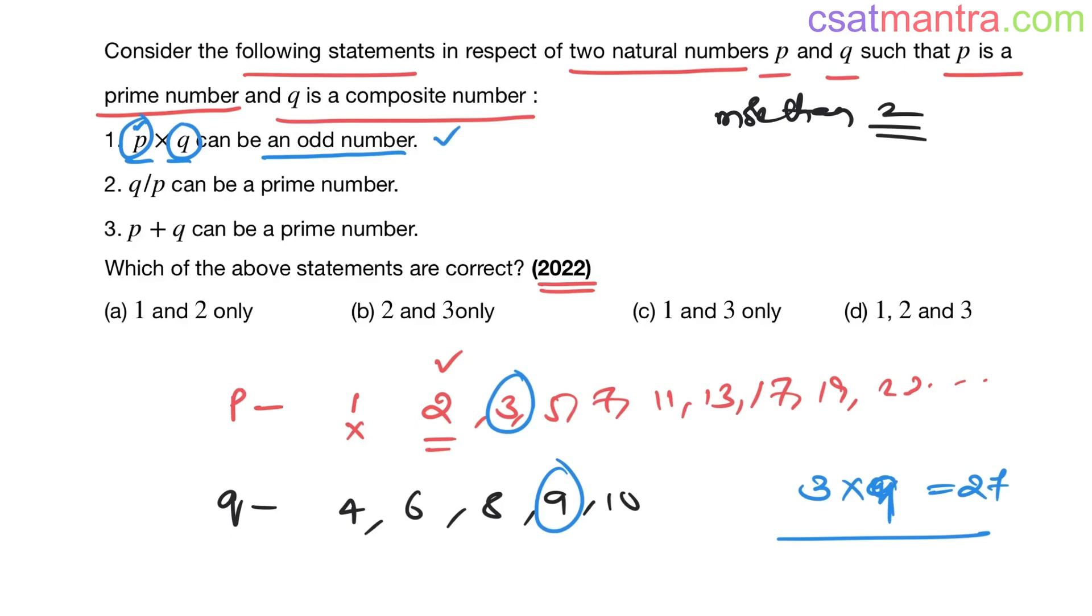Now q by p can be a prime number. I am taking q as 10, p as 2. So q by p, 10 by 2, equals 5. Yes, 5 is a prime number. This is also true. P and q in this statement and p and q in that statement need not be same.